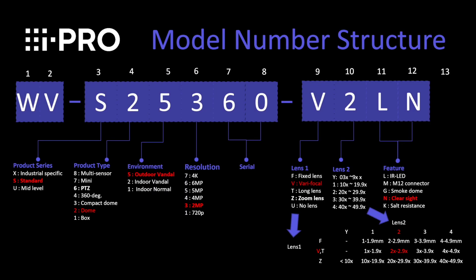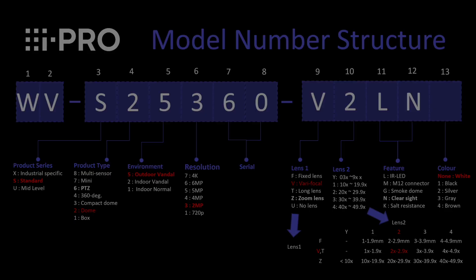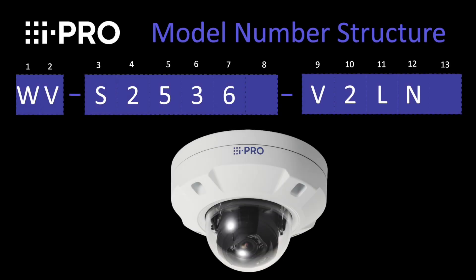The eleventh and twelfth characters indicate the features of the camera, whether it has IR, an M12 connector fitted, or if it has a smoke dome or clear sight coating fitted to the dome of the camera. And the last character, the 13th, indicates the color. For more information, please contact your local business development manager or reseller.